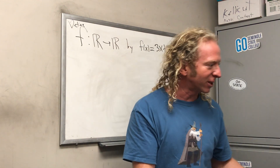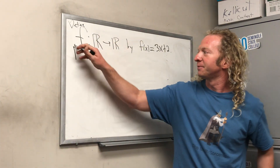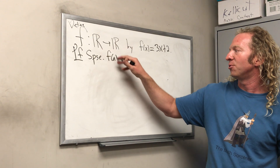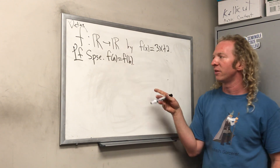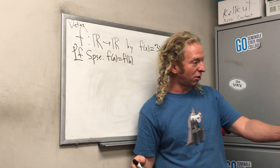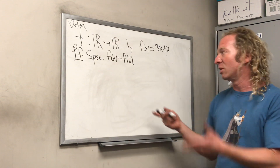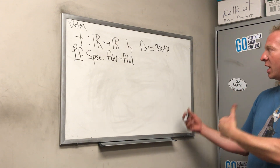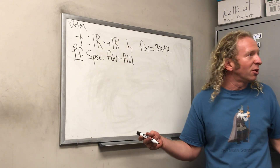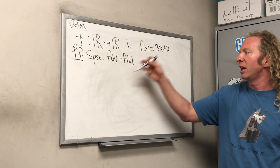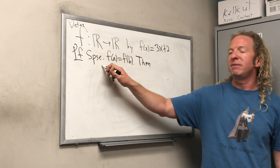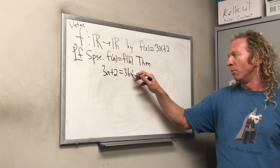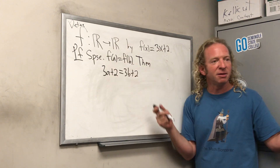So proof: we start by saying suppose f(a) = f(b). You always start your one-to-one proof like this — if you take discrete math, it's standard. Suppose the outputs are the same; now we have to show a = b. Well, f(a) is 3a + 2. So we plug in and get: 3a + 2 = 3b + 2.